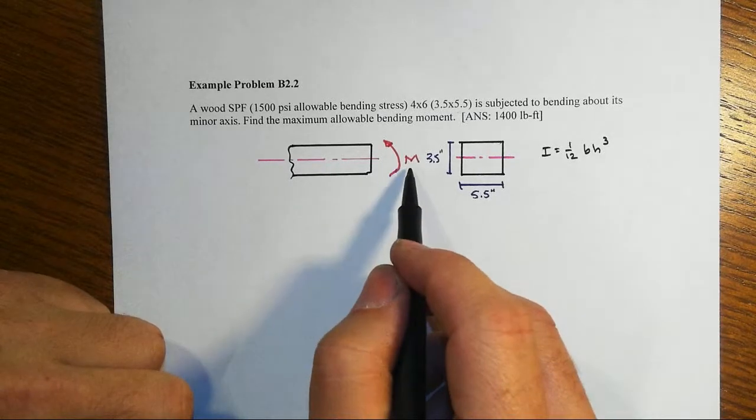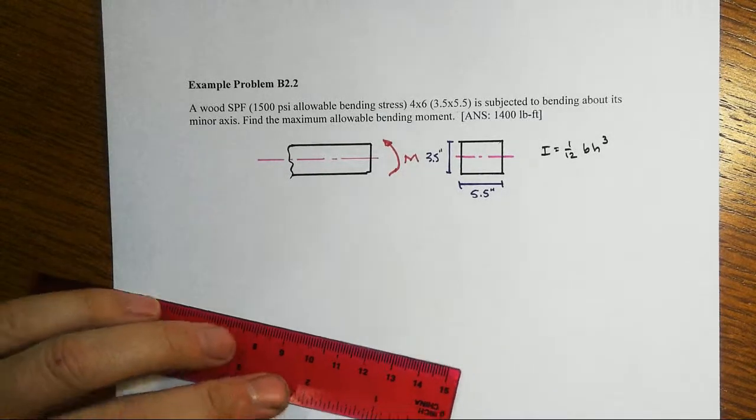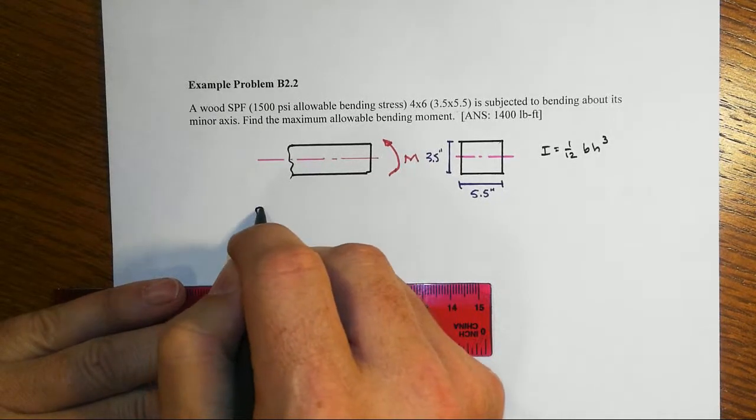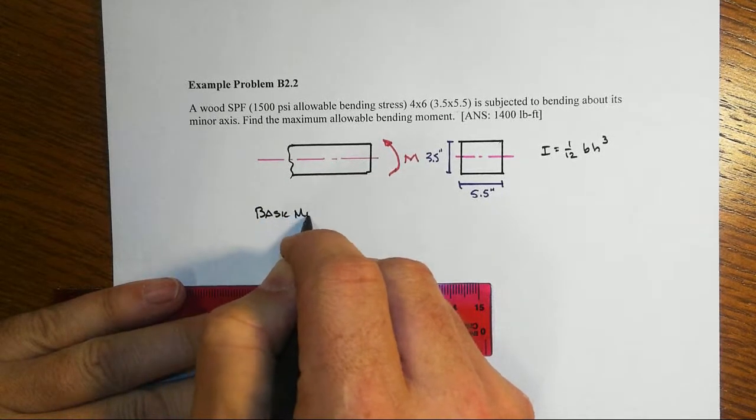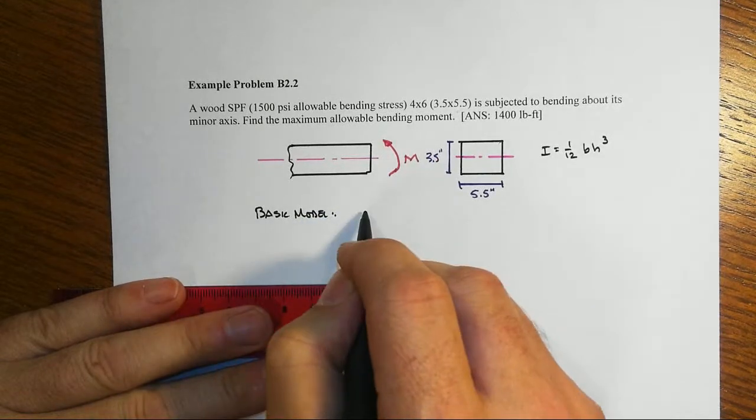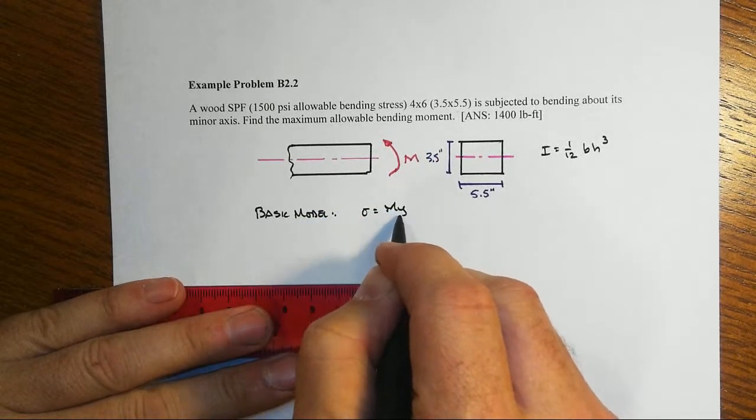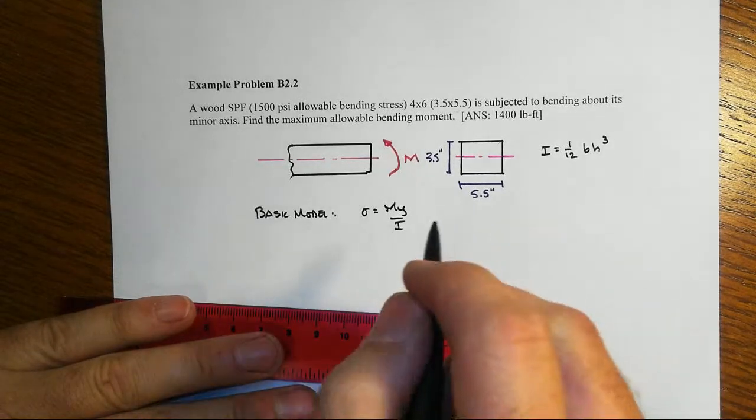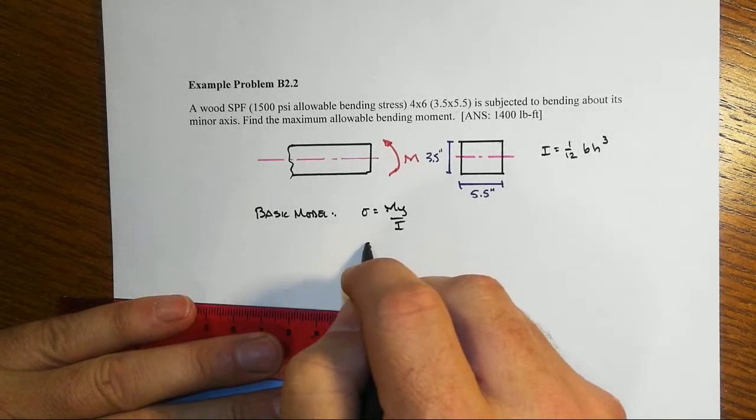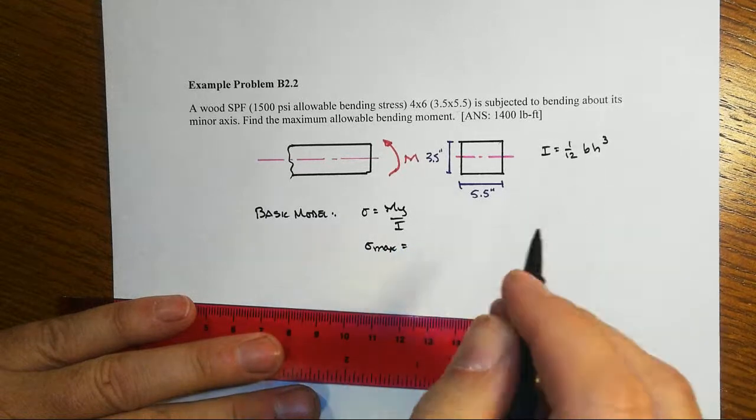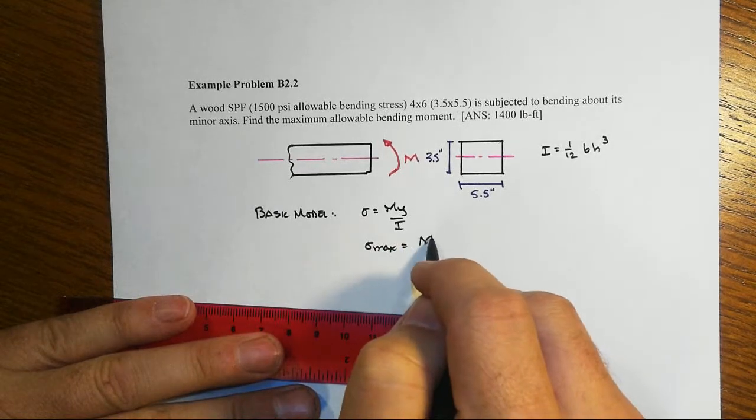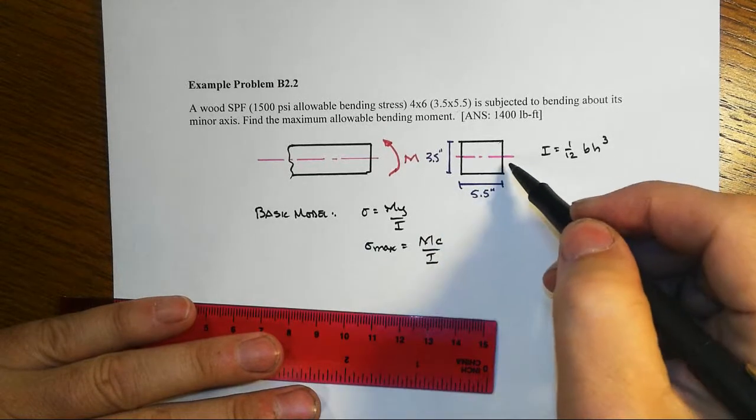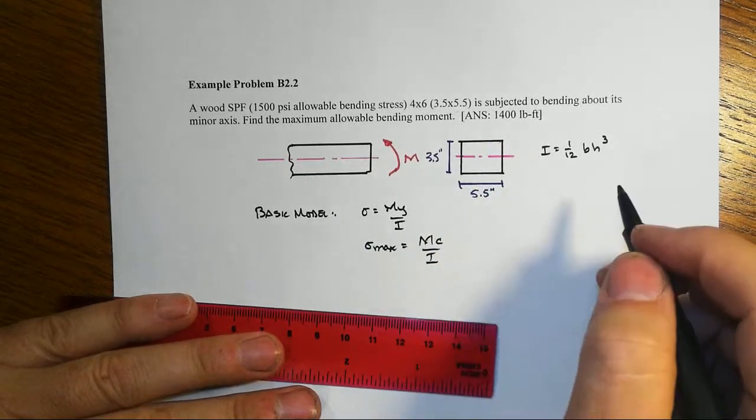We're trying to figure out what's this maximum allowable bending moment. This all goes back to the basic model, which says that sigma equals My over I. And that sigma max would be equal to Mc over I, that's where y is at the maximum, we're at the outer fiber.